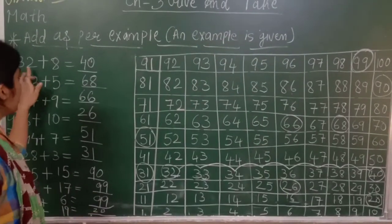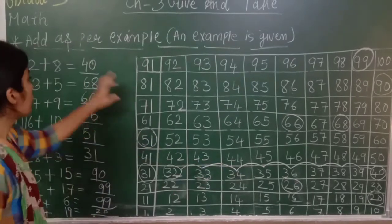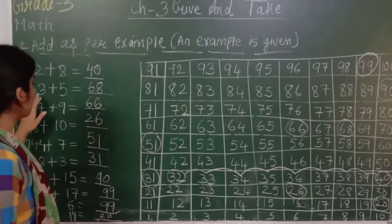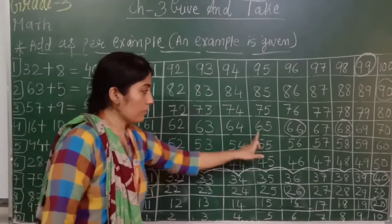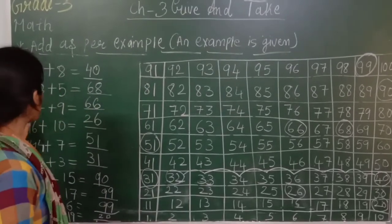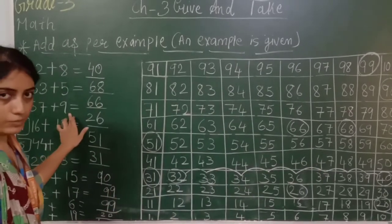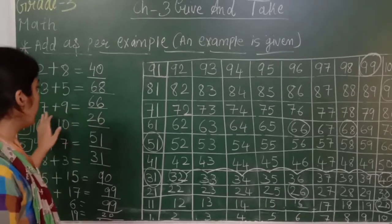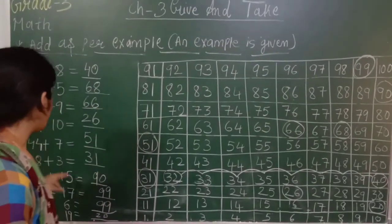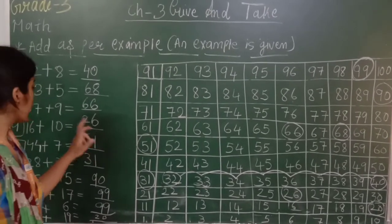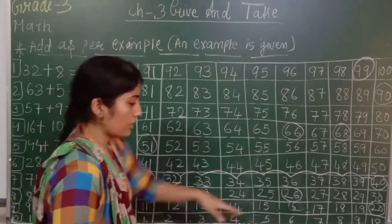Again I repeat: 32 plus 8 is equal to 40 — hum ne 32 pe khaade hoke 8 steps jump kiye, answer 40. Second: 63 plus 5 — 63 pe khaade, 5 steps jump kiye, answer 68. Third: 57 plus 9 — 57 pe khaade, 9 steps jump kiya, answer 66. Fourth: 16 plus 10 — 16 pe khaade, 10 steps jump kiya, answer 26.